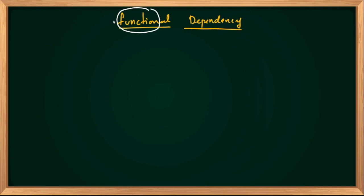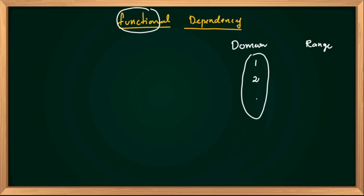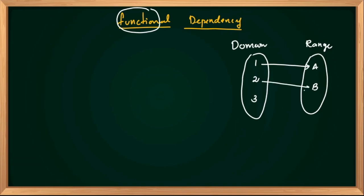We can write a domain. We will have a domain and we will have a range. Range is an output. In the domain there are three elements: one, two, three. In the range we have two elements. For example, one is mapped to A, two is mapped to B, and three is mapped to A. This is a function — all elements map to exactly one element on the right side.